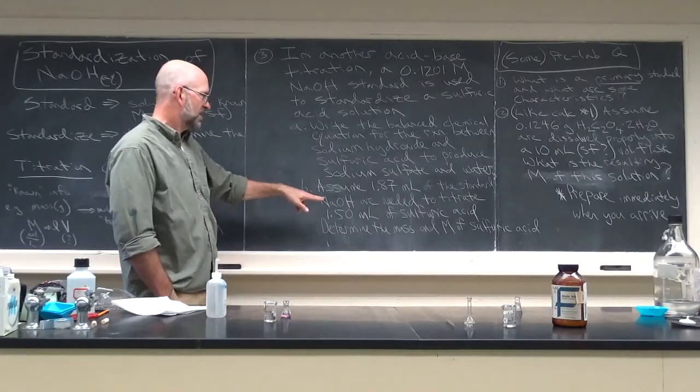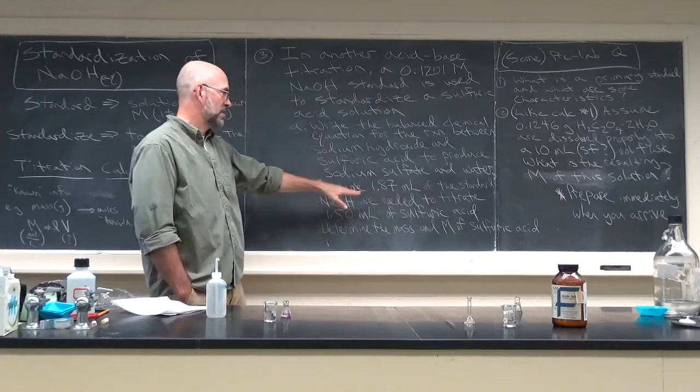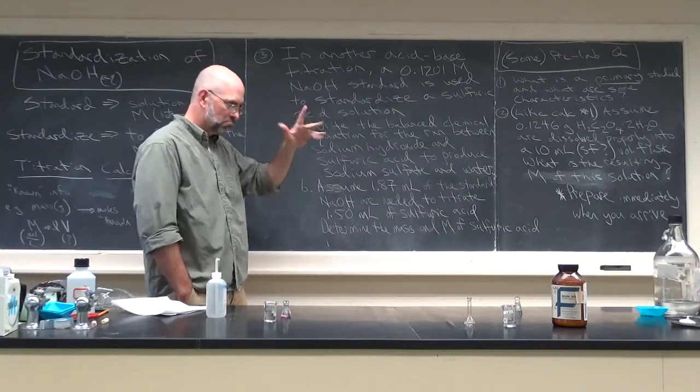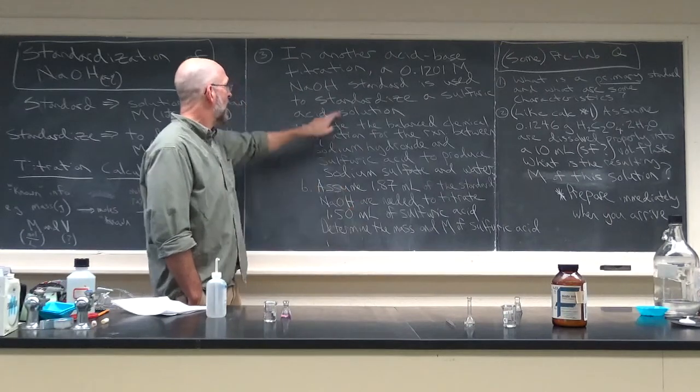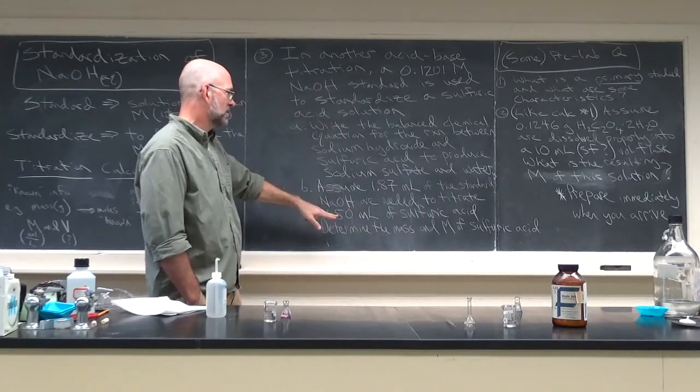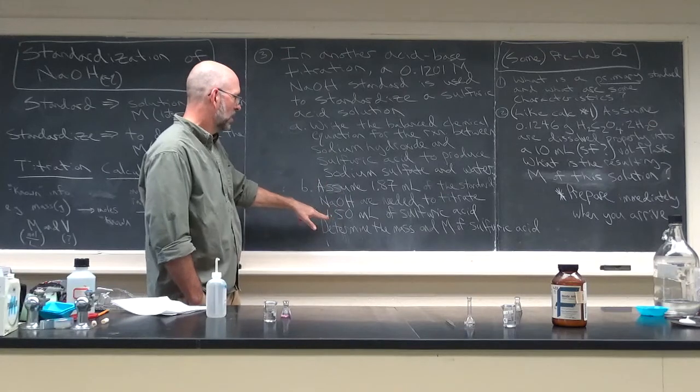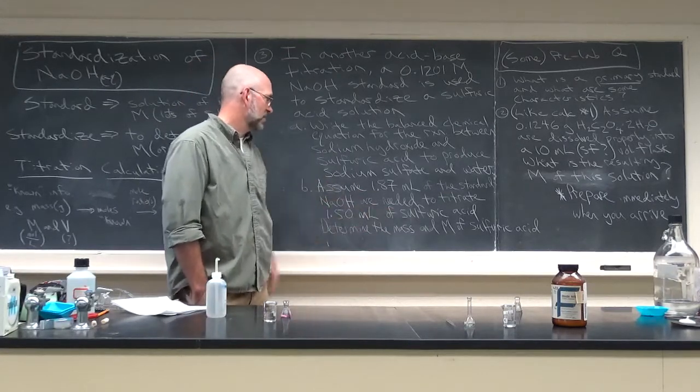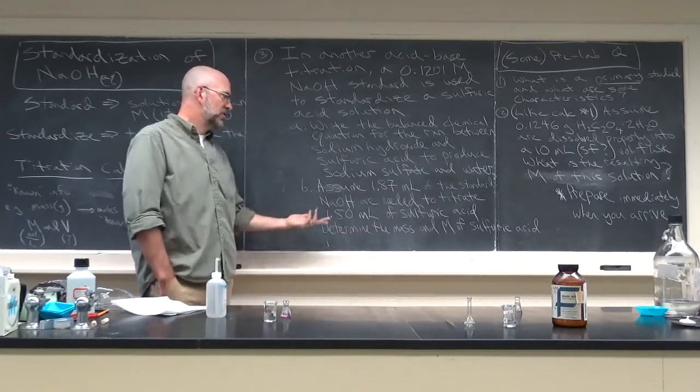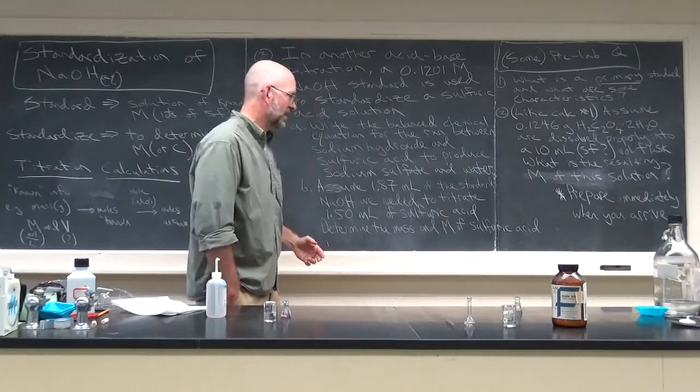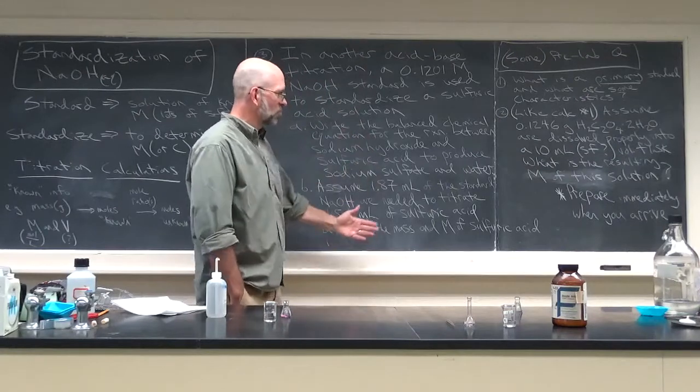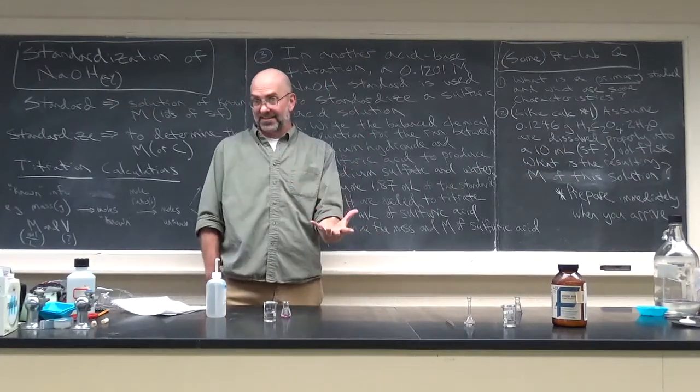Then let's assume that it takes 1.87 milliliters, so milliliters, molarity is the moles per liter, of the NaOH to titrate 1.50 mils of sulfuric acid. And then do two things. Determine the mass of sulfuric acid and then the molarity of the sulfuric acid. And that will be a nice warm-up calculation for today's lab.